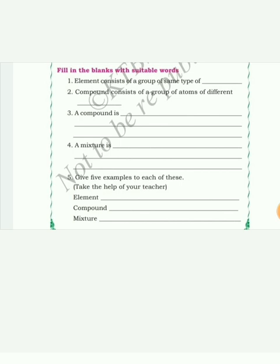Give five examples to each. Examples for elements: hydrogen, oxygen, gold, plutonium, iron, mercury. Examples for compounds: sugar, water, sodium chloride or table salt, carbon dioxide, methane. Examples for mixture: soil, sea water, air, salad.